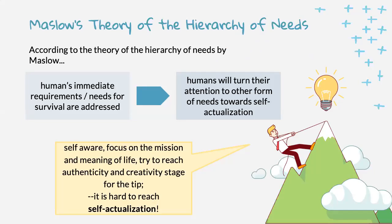Maslow's theory of hierarchy of needs states that humans' immediate requirements for survival should be addressed first before they can turn their attention to other forms of needs toward self-actualization — the tip of the triangle. To reach the tip, the individual must be self-aware, focus on their mission, build meaning in life, reach authenticity, and achieve a stage of creativity and life fulfillment. However, this stage is hard to reach and requires a lot of effort.